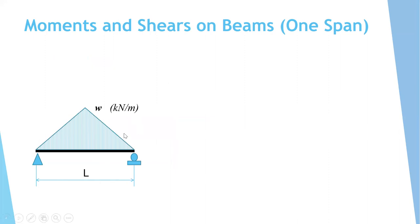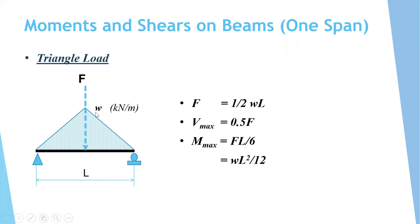For a triangle load W (kN/m) on a simply supported beam, the resultant F = ½ × W × L. Maximum shear is 0.5F and maximum moment equals FL/6, or WL²/12. So for a triangle load on a simply supported span, the maximum moment is FL/6 and the maximum shear is 0.5F, where F is the resultant force.